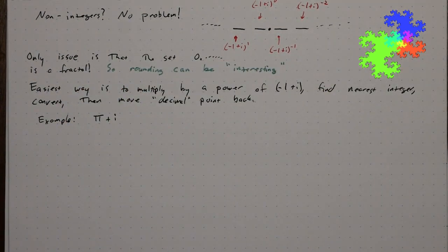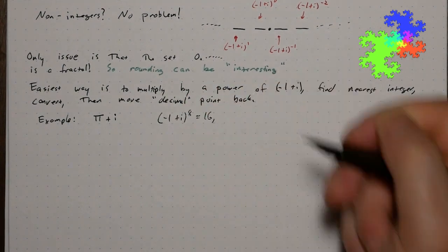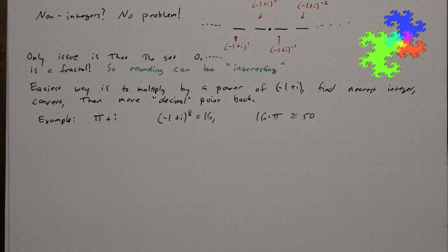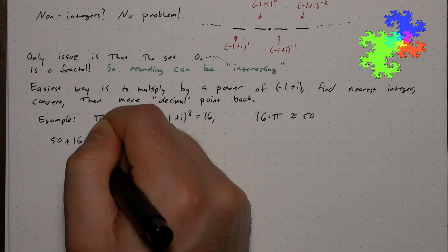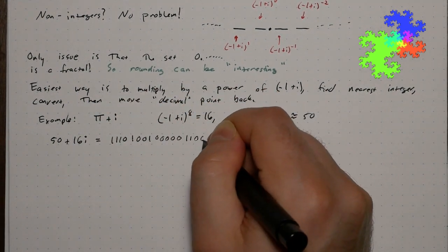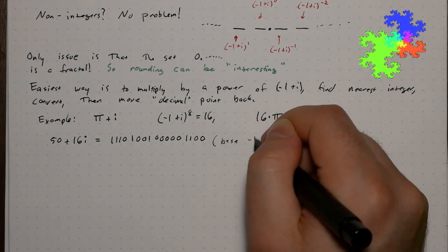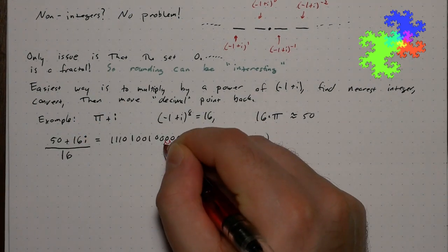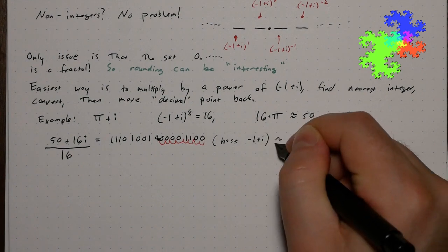Let's try pi plus i. Negative 1 plus i to the 8th is 16, and 16 times pi is close to 50. 50 plus 16i is 1 1 1 0 1 0 0 1 0 0 1 0 0 0 0 1 1 0 0. Moving the radix point back 8 bases is the same as division by 16. And there's our approximation.